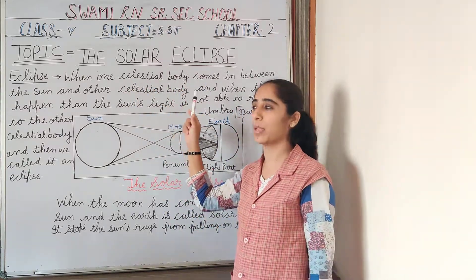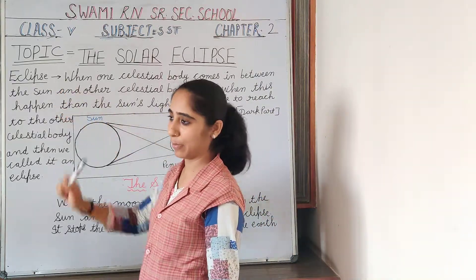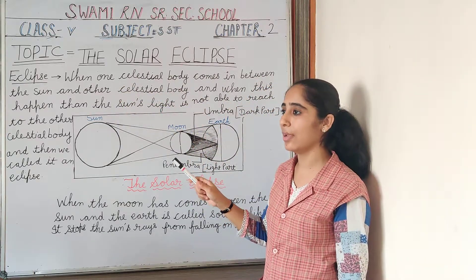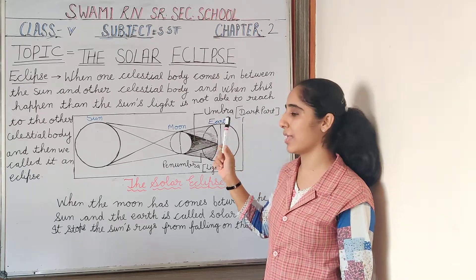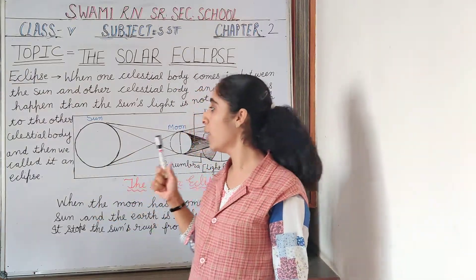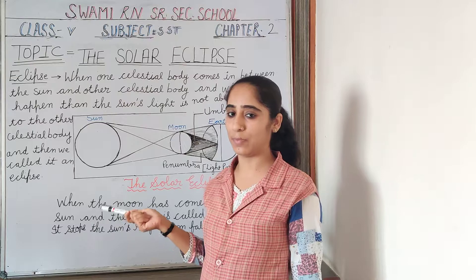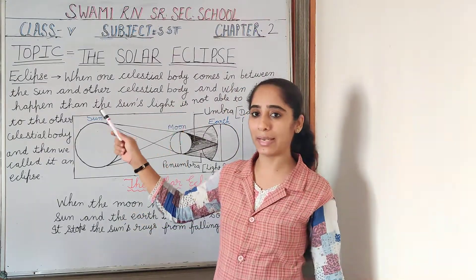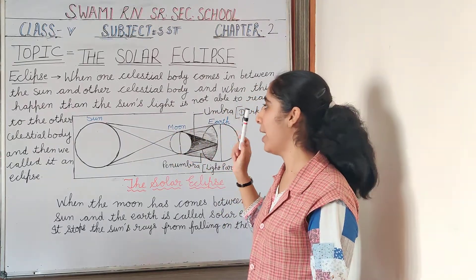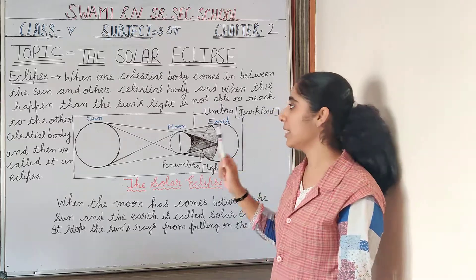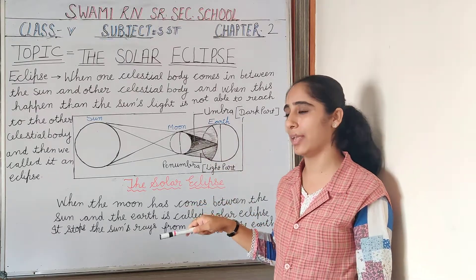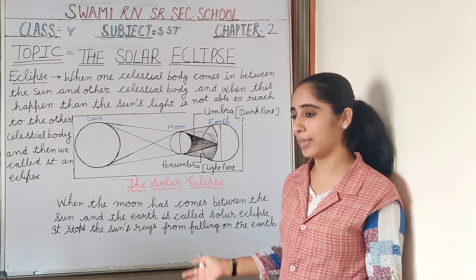Before starting this topic, we will understand what is an eclipse. When one celestial body comes in between the sun and another celestial body, sunlight is not able to reach the other celestial body, and then it is called an eclipse.